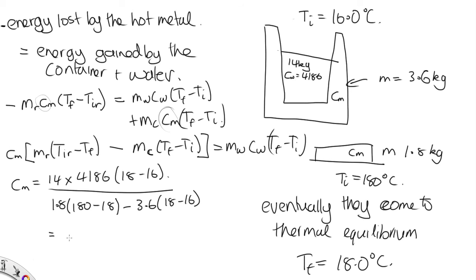Solving that on the calculator, we end up with 412 joules per kilogram per Kelvin. And that is the right order of magnitude for the heat capacity for a metal.